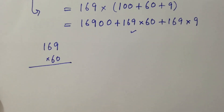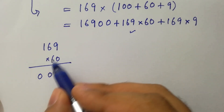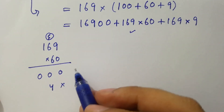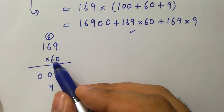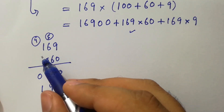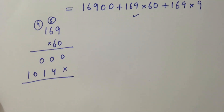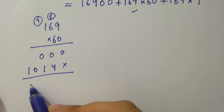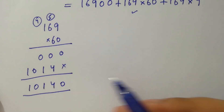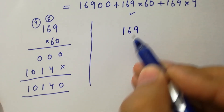For 169 times 60: 0 times 9 is 0, 0 times 6 is 0, 0 times 1 is 0. Then 6 times 9 is 54, write 4 carry 5. 6 times 6 is 36, plus 5 is 41, write 1 carry 4. 6 times 1 is 6, plus 4 is 10. So we get 10140. And now computing 169 times 9.